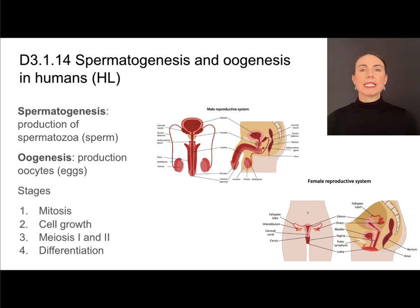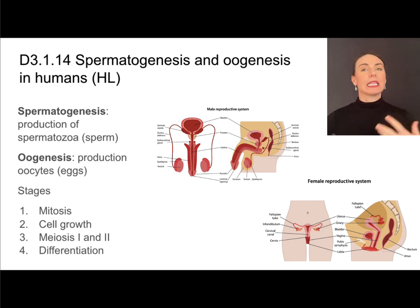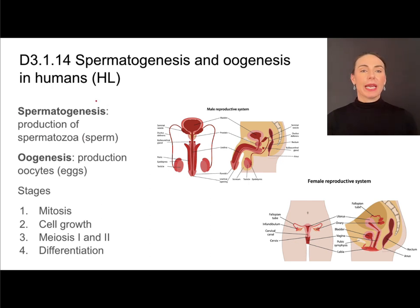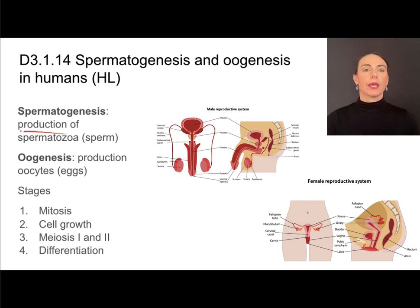When we say gamete production, we're talking about a process called gametogenesis, but we'll most likely be using the specific terms for males and females. In males, the process of gamete production is called spermatogenesis — this is the development or production of gametes. Specifically, it's going to produce spermatozoa, which will mature later into sperm.